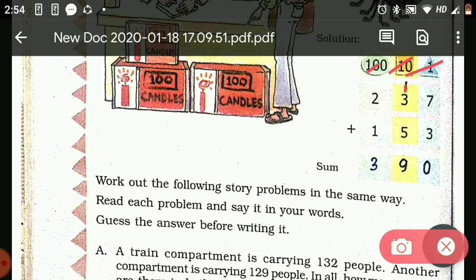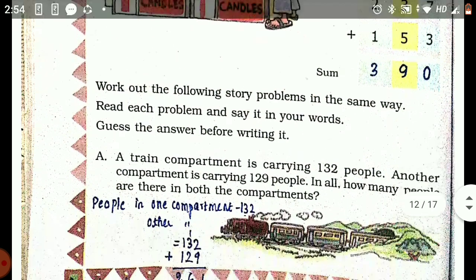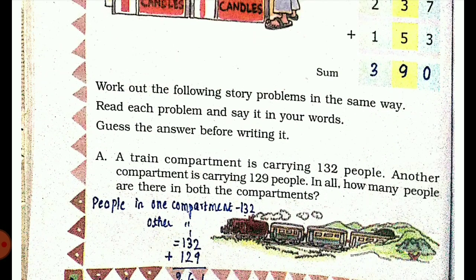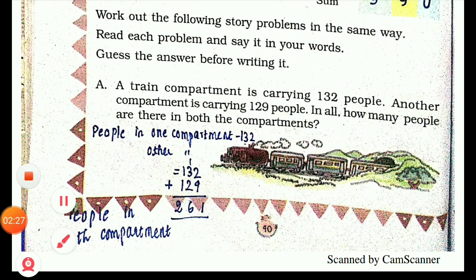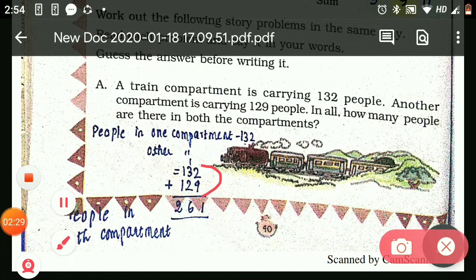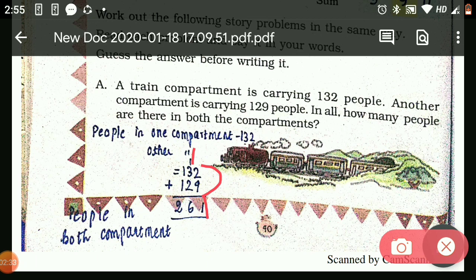Next problem: A train compartment is carrying 132 people. Another compartment is carrying 129 people. In all, how many people are there in both the compartments? First you have to write 132 and 129. 2 plus 9 is 11, so 1 here and carry 1. 1 plus 3 plus 2 is 6, then 1 plus 1 is 2. So the answer is 261.